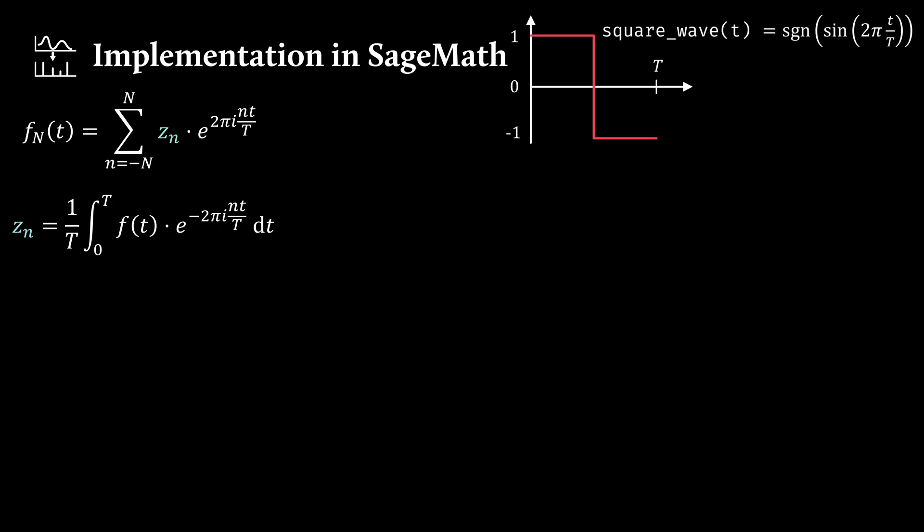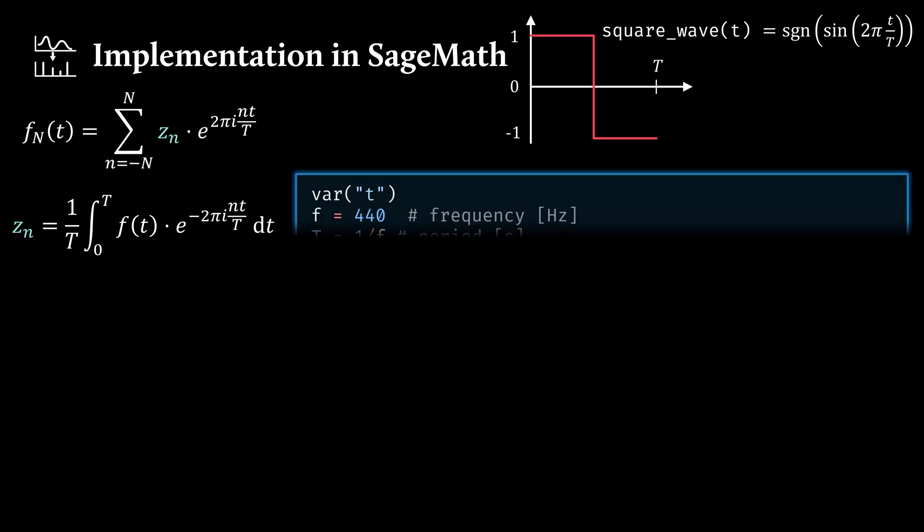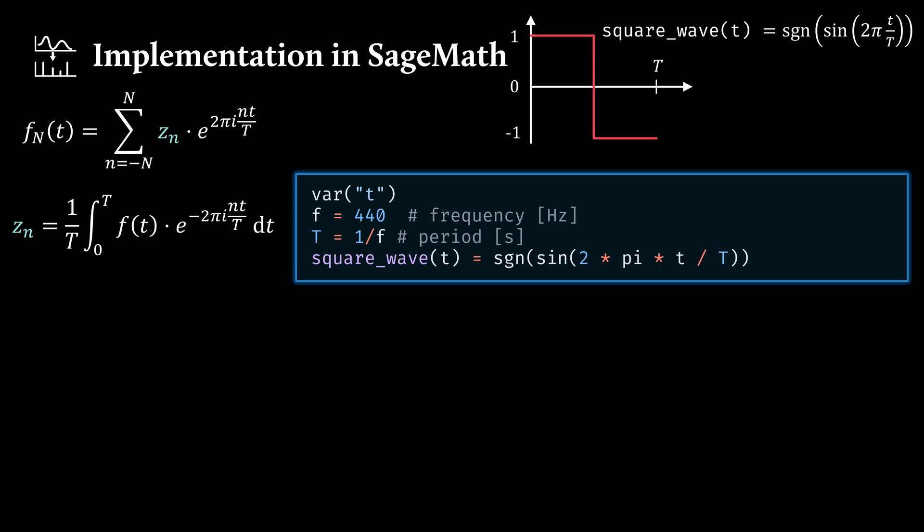As an example, consider the square wave given by this expression, the signum of the sine wave, or should I say the sine of the sine wave, pun intended. When we define this function in SageMath, we declare var t, because t is our free variable. And then we can just write down the expression.